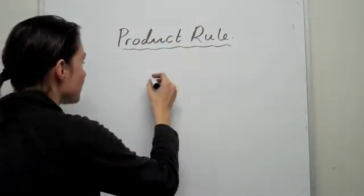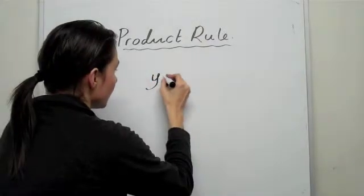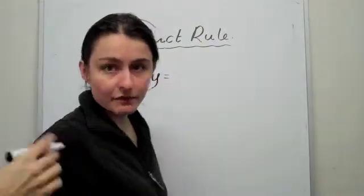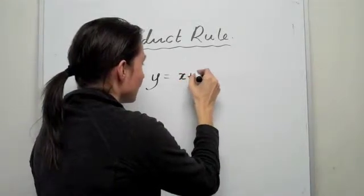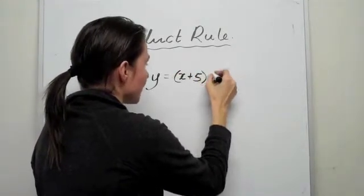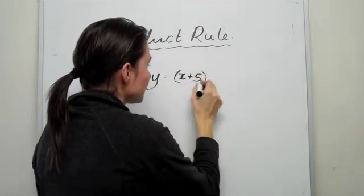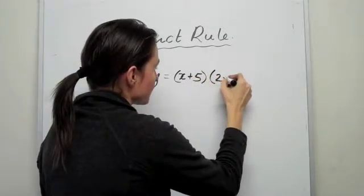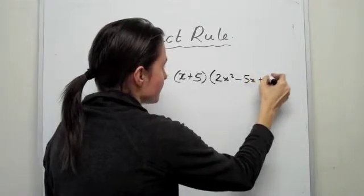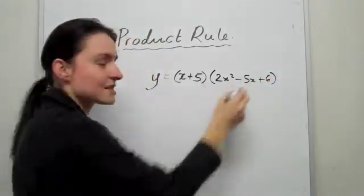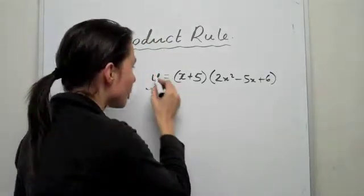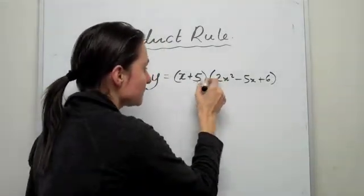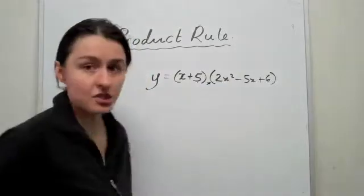You use it basically when the stuff that you want to find the derivative of is multiplying by itself. So x plus 5 times 2x squared minus 5x plus 6. If you cannot be bothered expanding this, then in order to differentiate you have to use the product rule because basically in between these two brackets there's a multiplication sign.